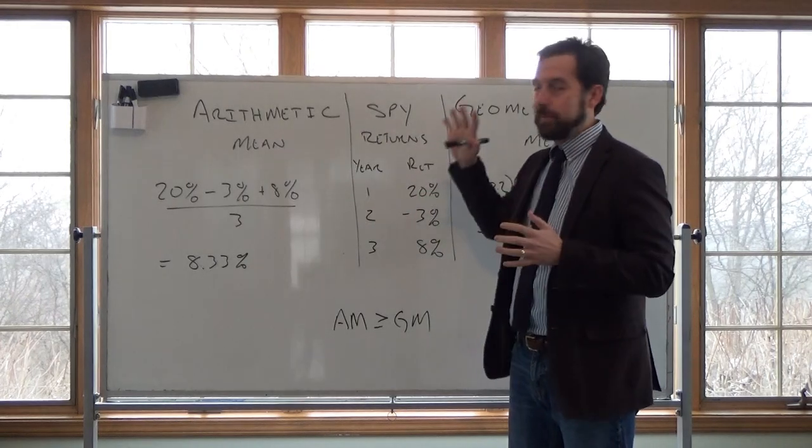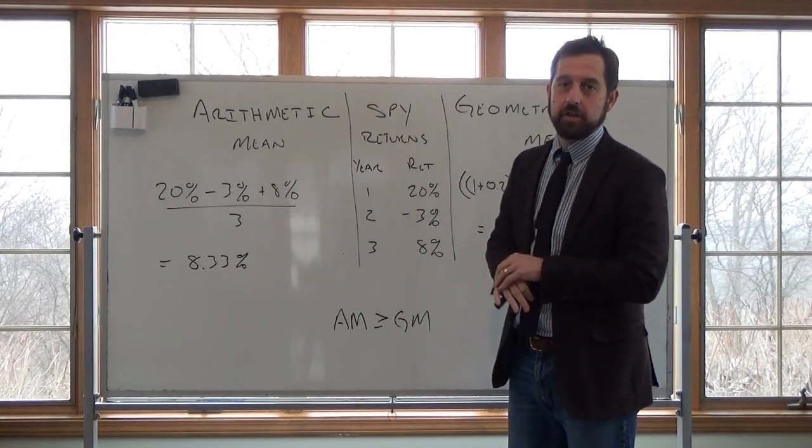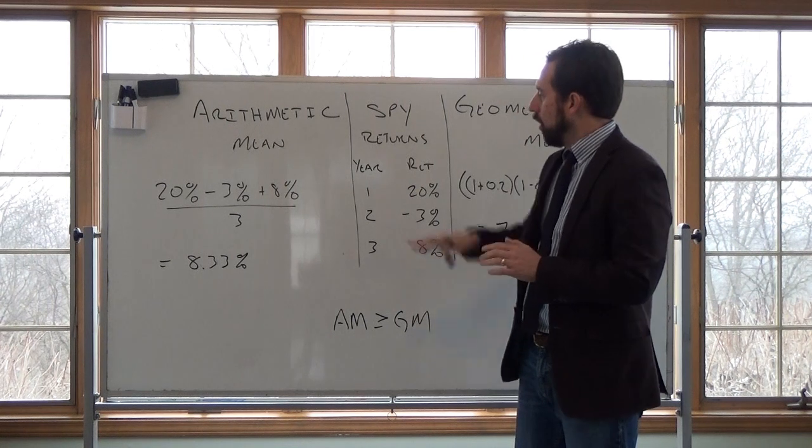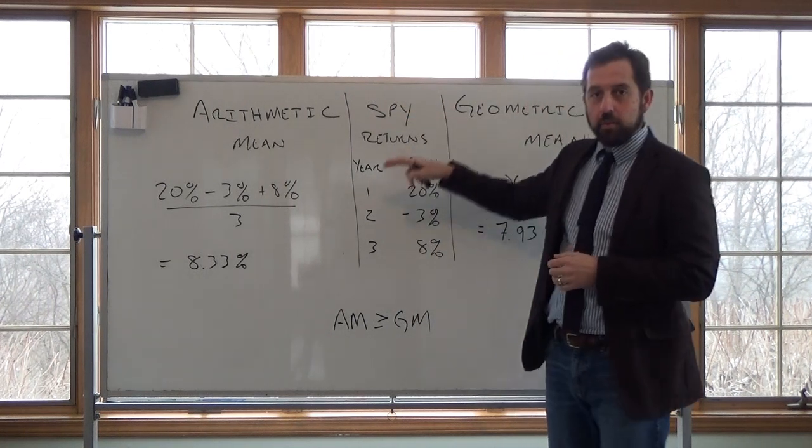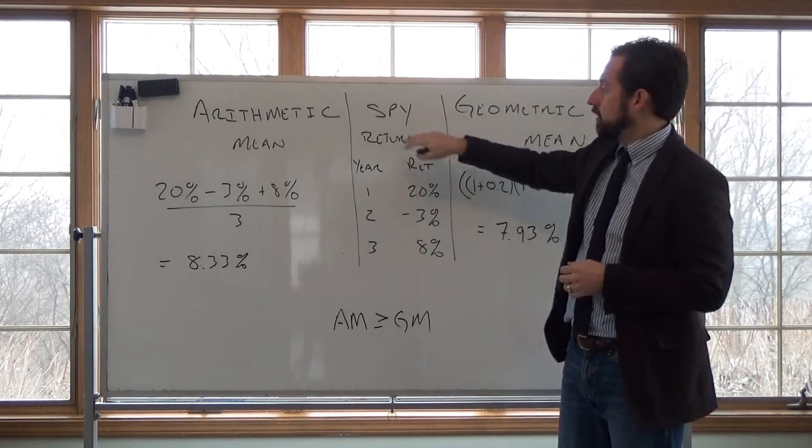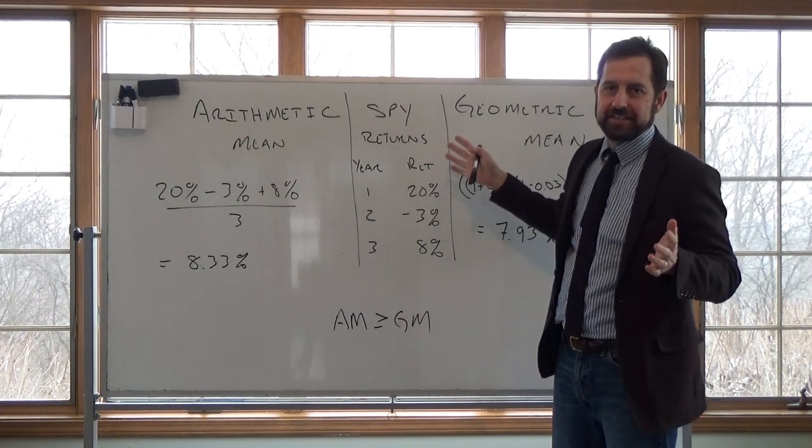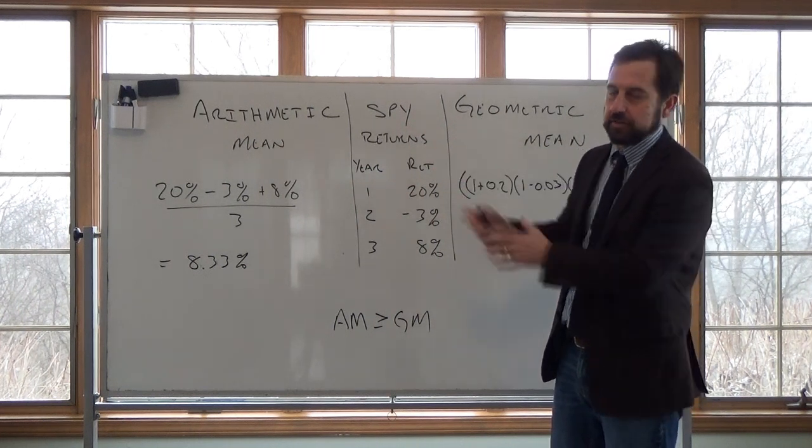What I'm going to do here is talk briefly about two different types of means that we use in finance. So what I have here is these are going to be stock market returns. So SPY, that's ETF, tracks the S&P 500. So this is the market.